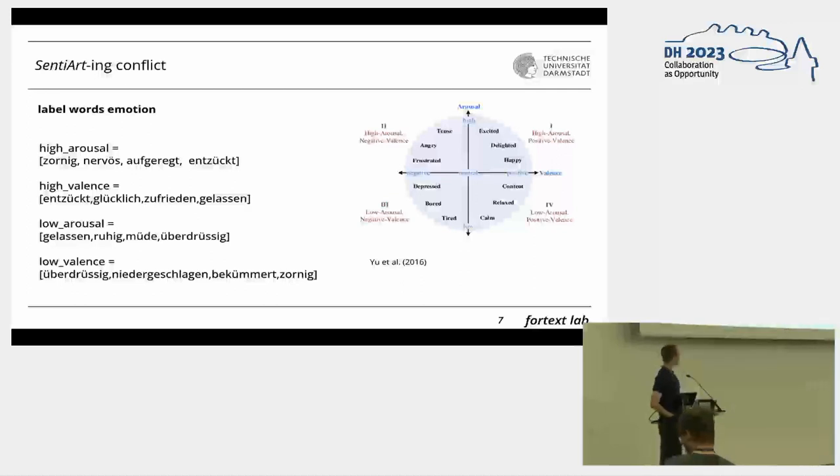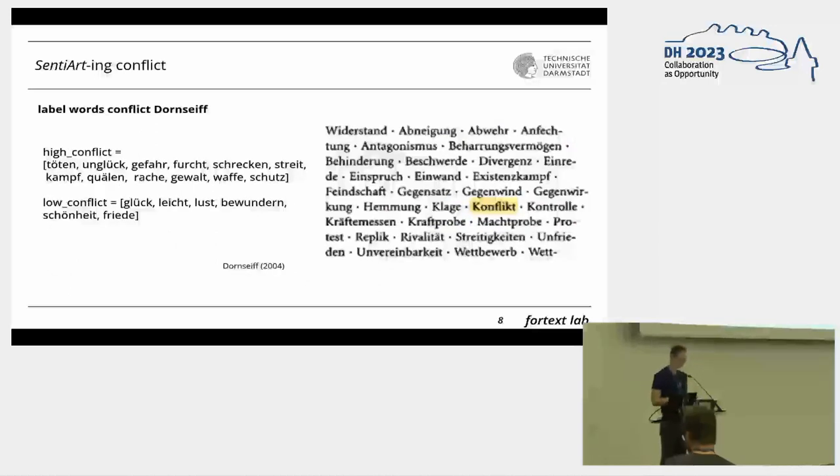We started by taking words from a German dictionary sorted by subject groups, the Dornsai dictionary. We took an educated selection of words around the field of conflict for the upper end of the spectrum and harmony for the lower end. This resulted in a label list for high conflict of: to kill, misfortune, danger, fear, fright, quarrel, fight, torment, revenge, violence, weapon, and protection.